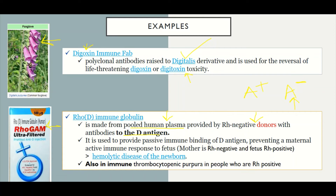Individuals who are Rh-negative are able to produce antibodies against the D antigen. So once you give D antigen to humans with A negative, they are going to produce the Rh antibodies. Once we do that, we are able to purify the human serum, and these human antibodies against D antigen can be used to bind D antigen in situations of maternal active immune response towards the fetus.